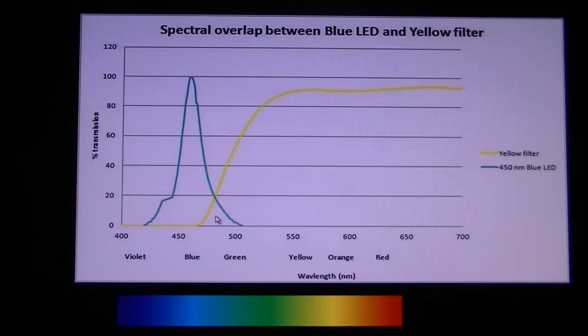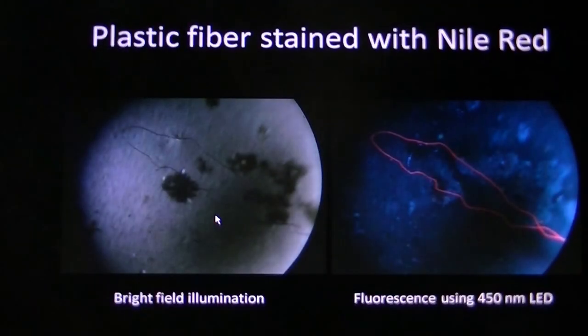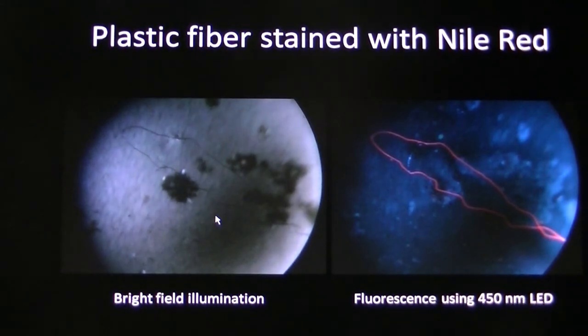As an example, here's a cigarette butt fiber in water viewed by bright field. We just see this fine plastic fiber - this field of view is a couple of millimeters or so. Then turning on the LED light and viewing through a yellow filter, we see the red fiber stained up with Nile red dye.